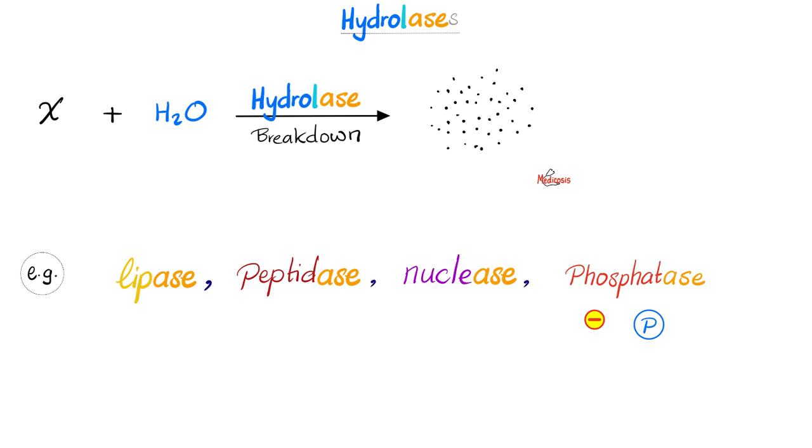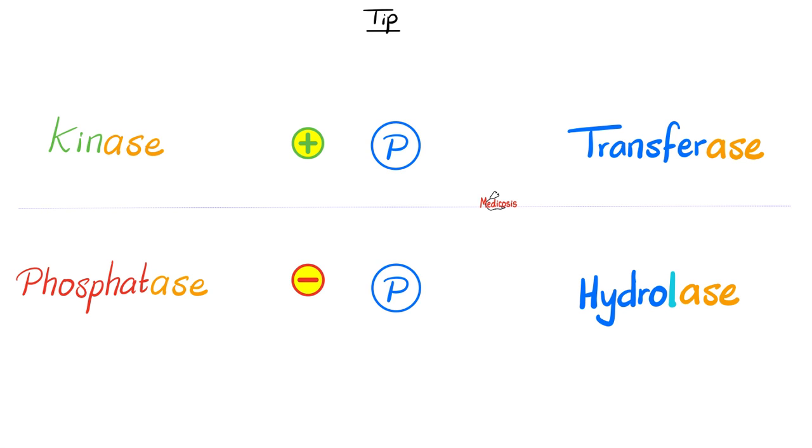Next, what's a hydrolase? Ase is an enzyme, hydro means water. It's an enzyme that breaks down in the presence of water. Hydrolysis could be lipases, peptidases, nucleases, or phosphatases. Lipase is an enzyme that breaks down lipid in presence of water. Peptidase breaks down peptide in presence of water. Nuclease breaks down nucleic acid. Phosphatase breaks down phosphate. So I hope you realize that kinases add phosphate and they are examples of transferases. They transfer a phosphate group to you, they give you a phosphate. That's a transferase. Conversely, phosphatase, which removes a phosphate, is a hydrolase. It breaks down your phosphate. It takes the phosphate away from you in the presence of water.